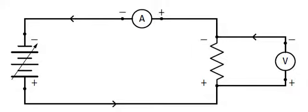We can find the electric resistance by comparing the electric potential difference the charge experiences as it passes through the conductor with the amount of electric current.